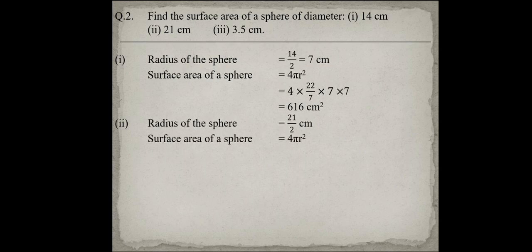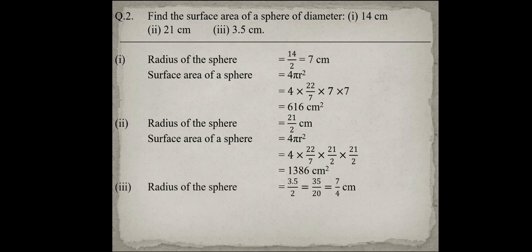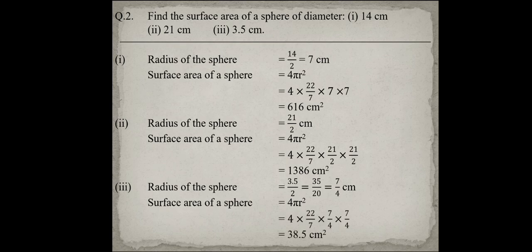In the second part, radius is 21 upon 2 = 10.5 cm. Put the value: 4 into 22 upon 7 into 21 upon 2 into 21 upon 2, so that is equals to 1386 cm². In the third part, radius is 3.5 upon 2 = 35 upon 20 = 7 upon 4 cm. After putting the value, we find the area of the sphere equals 38.5 cm².